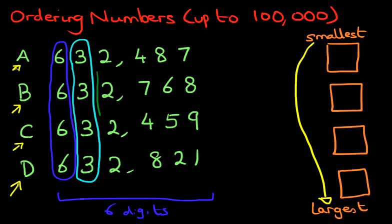Now we're going to look at the thousands. And what do you notice about these numbers? They are all two — again, they are all the same. So let's carry on.